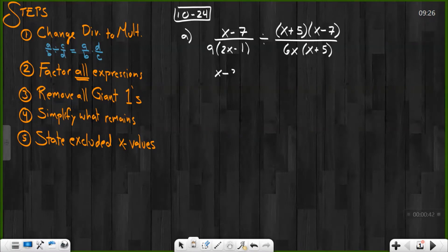First off, we've got x minus 7 over 9 times 2x minus 1. Change that to multiplication. Over here, I've got 6x times x plus 5 over x plus 5 times x minus 7. Now, thankfully, everything's already factored for us at this point.